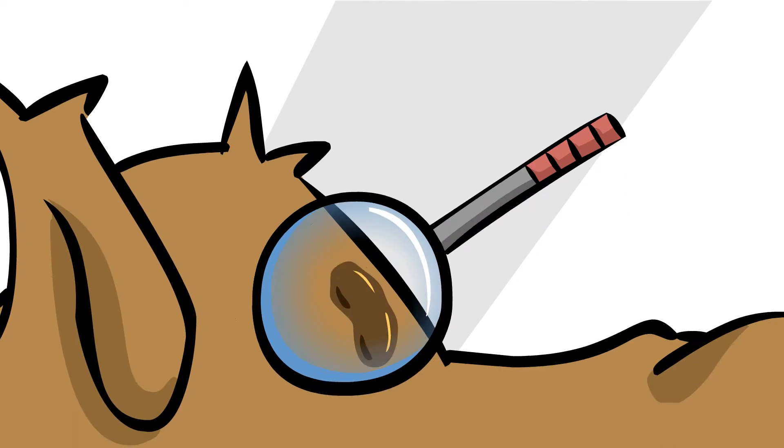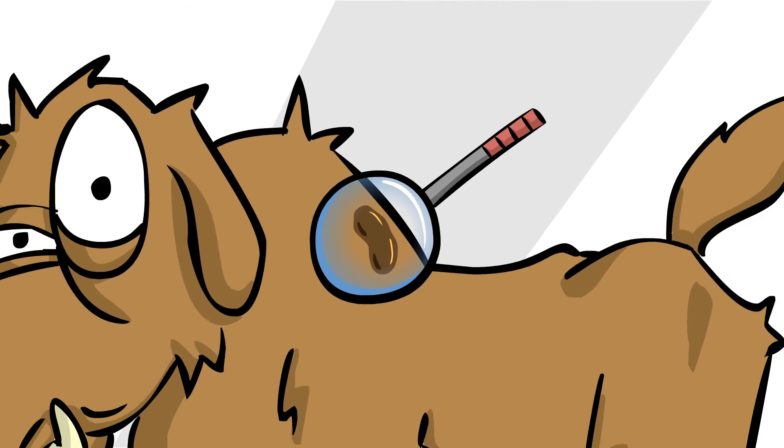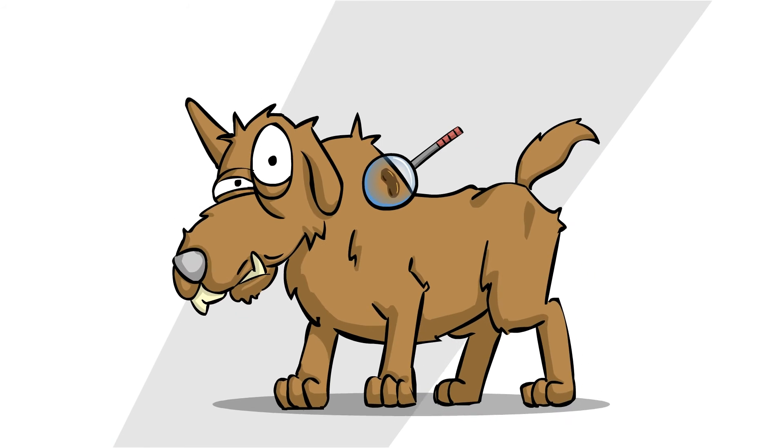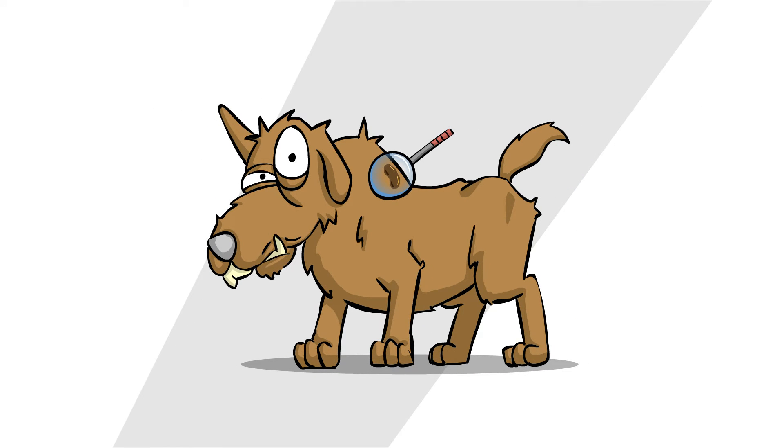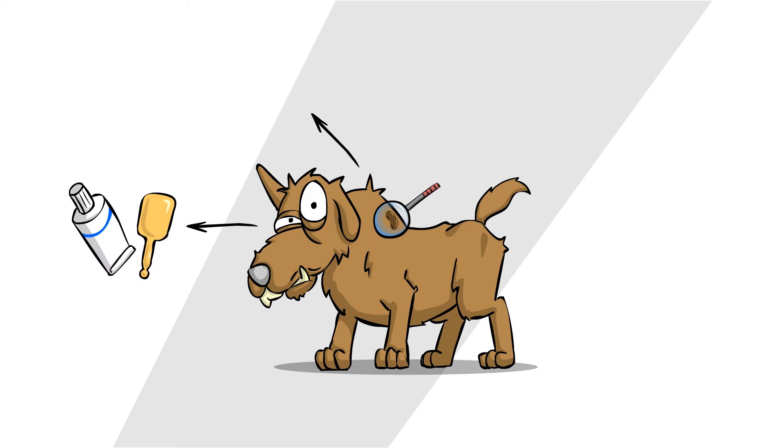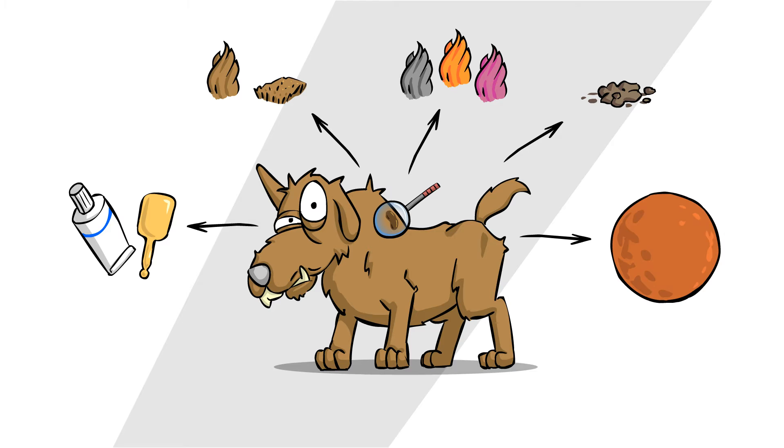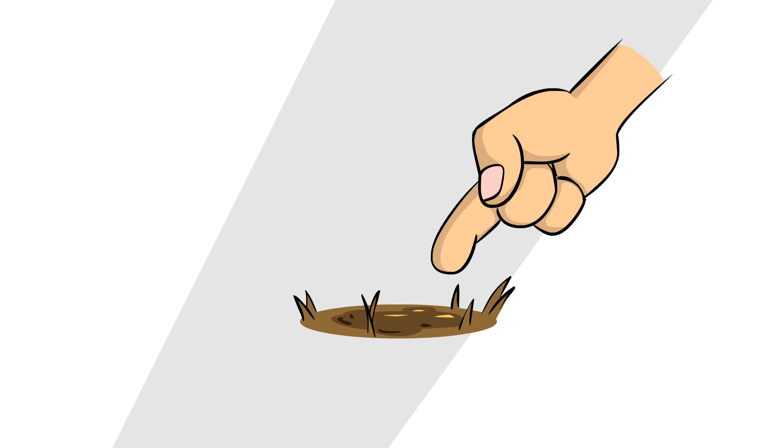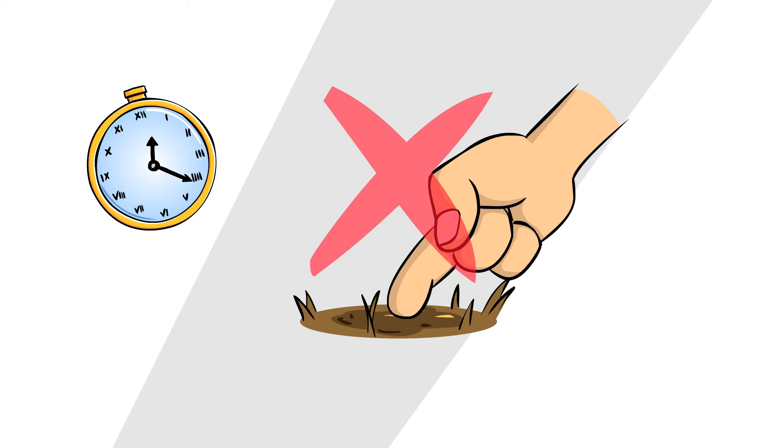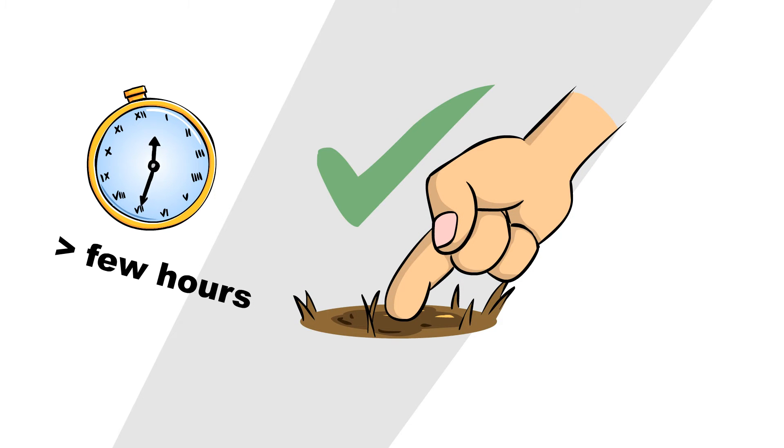Spot-ons may leave a small, greasy patch on the fur, ruining your pet's radiating beauty. The severity of this effect highly depends on the product, hair length, coat color, the amount of dirt on the skin and on the alignment of Mars with the stock market index. But don't worry, apart from the first few hours after application, these spots are safe to touch.